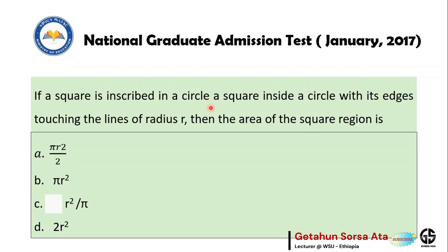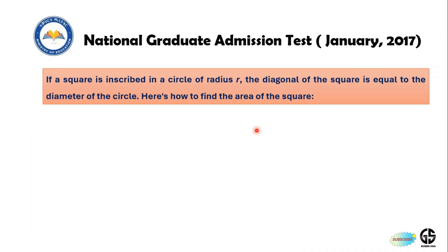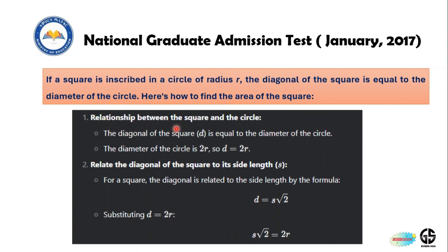We are given a square inscribed in a circle with vertices touching the circle of radius r, and we need to find the area of the square. If the square is inscribed in a circle of radius r, the diagonal of the square is equal to the diameter of the circle.